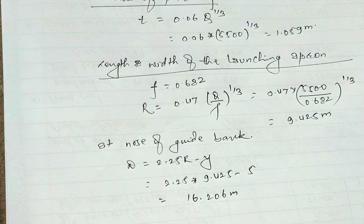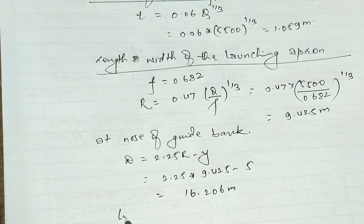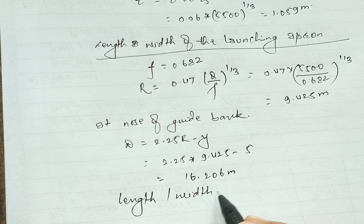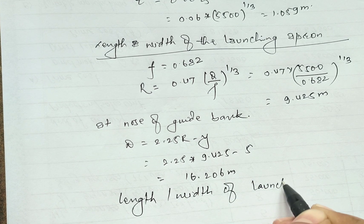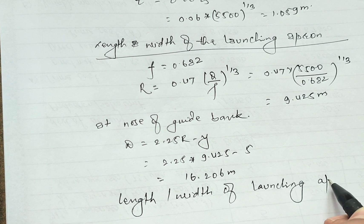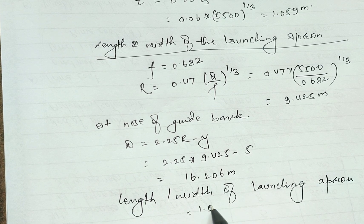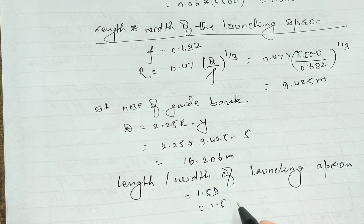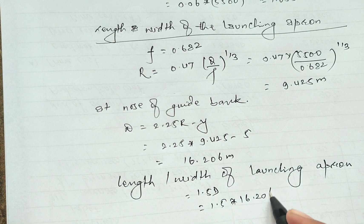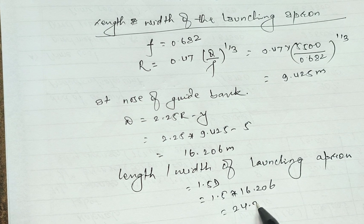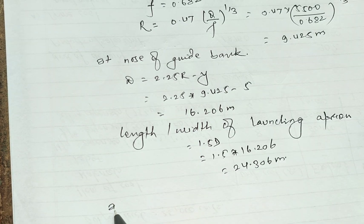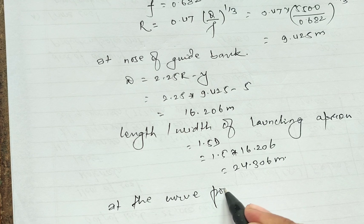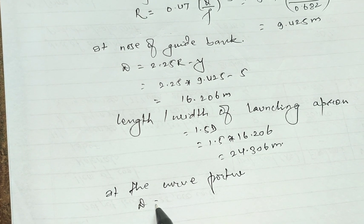At the nose of the guide bank, scour depth D equals 2.25R minus y equals 2.25 times 9.425 minus 5 equals 16.206 meters. The length-to-width ratio of the launching apron equals 1.5D equals 1.5 times 16.206 equals 24.306 meters.